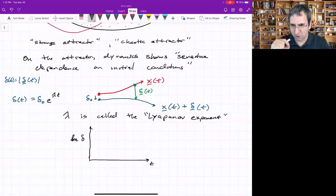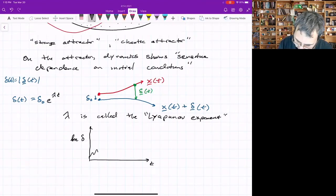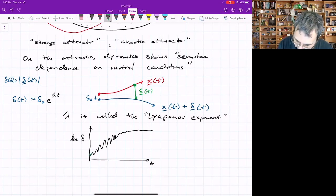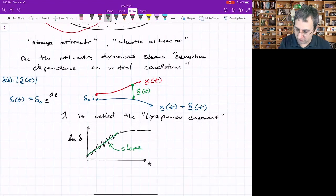What you'll see, if you start with a very small delta naught, you'll see that this will kind of do something and then it will saturate once you've sort of reached the size of the attractor, because this can't go on forever. And this average slope here, the slope will be lambda. You can get at this numerically.